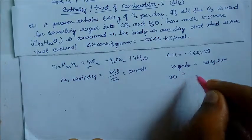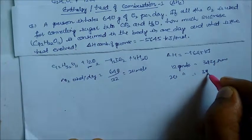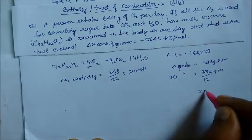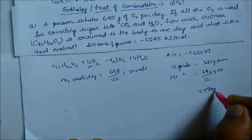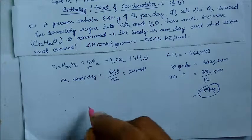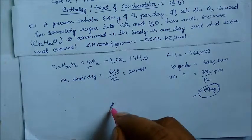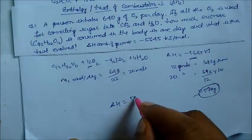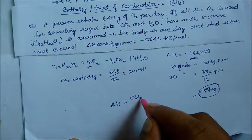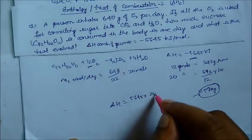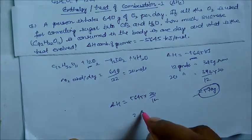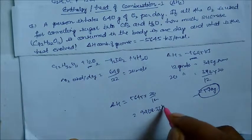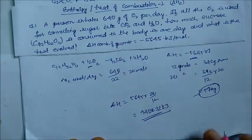So for 20 moles of oxygen, the sucrose required is 342 divided by 12 multiplied by 20, which gives approximately 570 grams of sucrose. The delta H required is 5645 multiplied by 20 divided by 12, giving 9408.33 kilojoule. This is our answer.